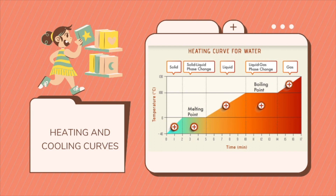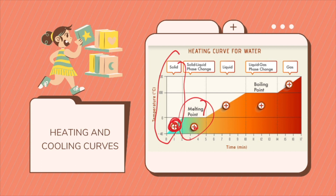Looking at the heating curve for water: during heating, the particles of solid water — which is ice — increase in temperature and kinetic energy until they reach the transition point for phase change. The particles begin to vibrate faster, and once it reaches the melting point, the ice begins to melt and transition to water. The temperature remains constant at this point because the energy absorbed goes into overcoming the intermolecular forces holding the atoms of the solid together.